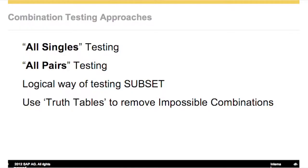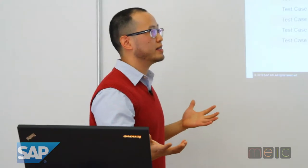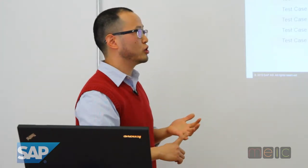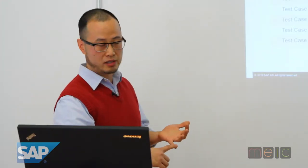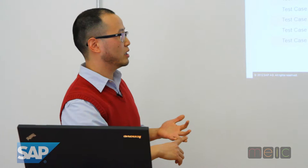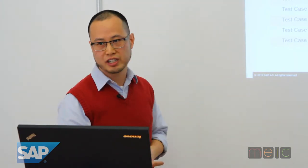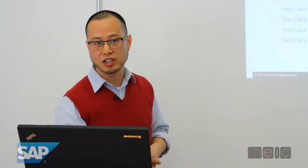Another one is all singles and all pairs type of testing. This is kind of neat. The idea is we want to test things like language, OS, and type. But if we were to multiply all the permutations, that'd be quite a lot.